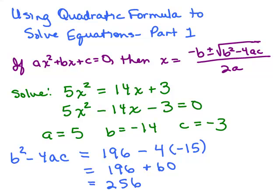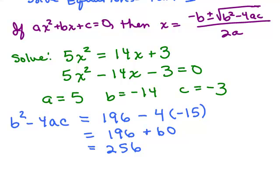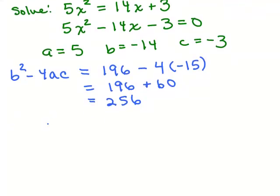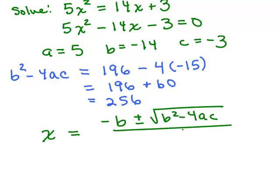So we work that out ahead of time. I think you'll see this makes it a little bit less cumbersome to plug in the formula. Now the formula says it's the opposite of b. I'm going to write the formula again: -b ± √(b² - 4ac) all over 2a. So now I'm going to replace negative b, I'm going to put in the opposite of whatever b is. If b is negative 14, then the opposite of b is positive 14. Plus or minus.